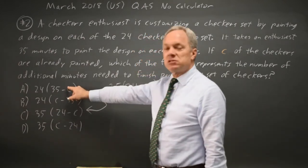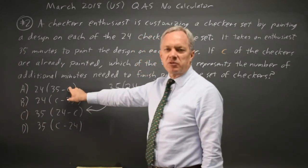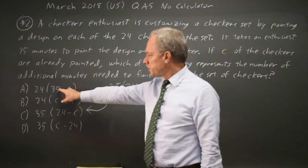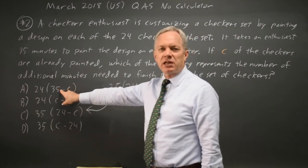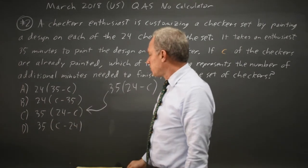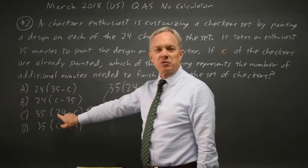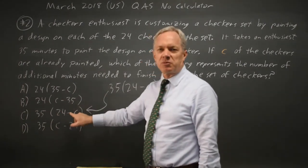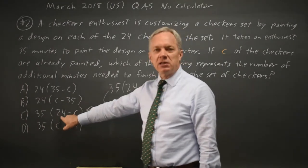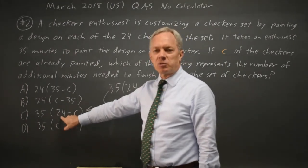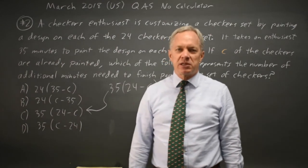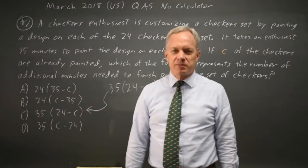Choice A involves subtracting the number of checkers that have been painted from the time per checker to paint, and that does not make sense. So C is the only choice that makes sense. We're taking the total number of checkers minus the number already painted to get the total remaining, then multiplying by the time per checker to get the time to paint all the remaining checkers.